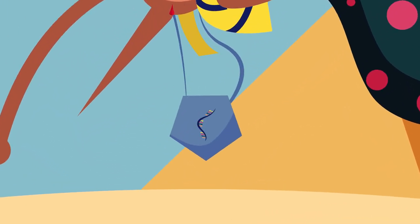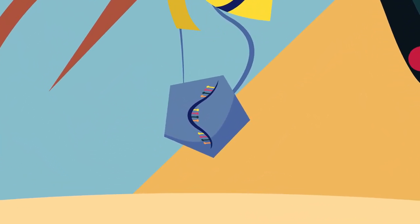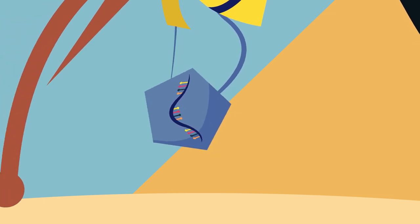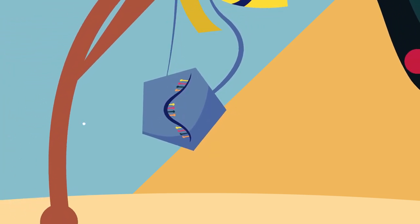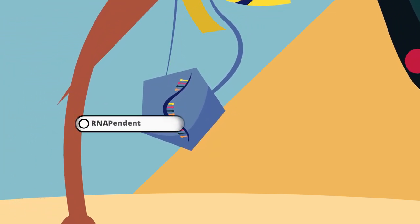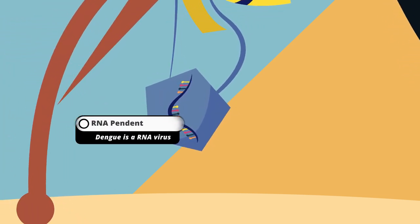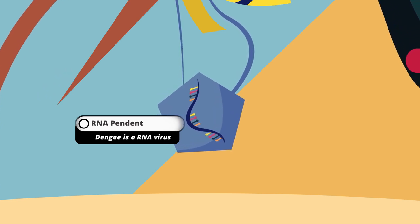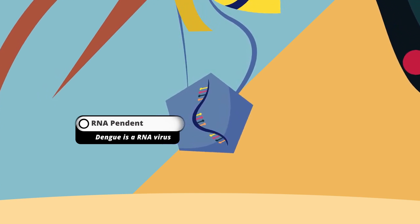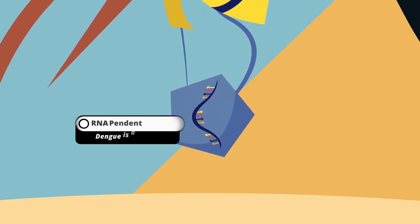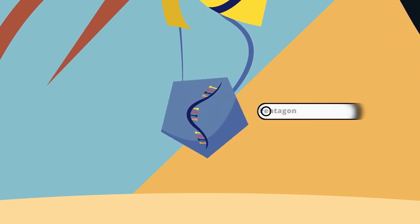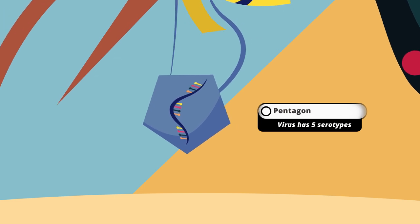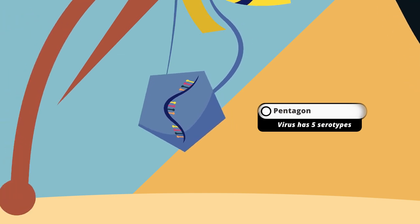DNA is a double helix structure, but RNA has only one strand — that's what this pendant is for. The female mosquito is carrying the RNA virus. The pentagon represents the five different serotypes of the virus.